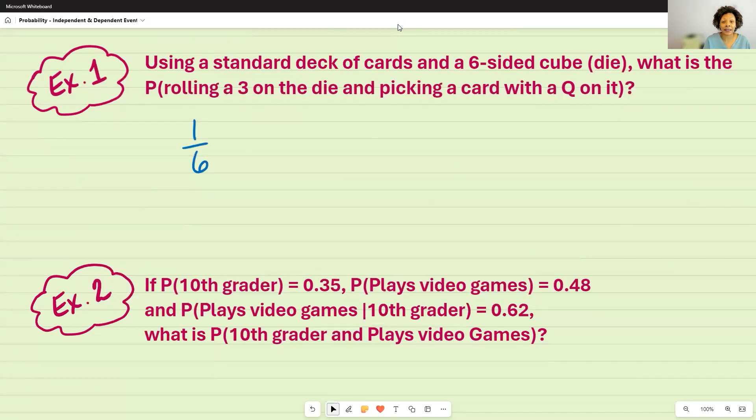Well, my first probability is one out of six, and the word AND tells me to multiply. Then how many cards do I have? And there's 52 cards in the standard deck. So out of those 52 cards, how many of those cards have a Q on it?